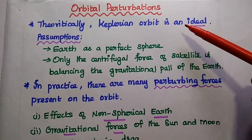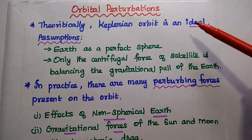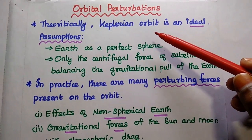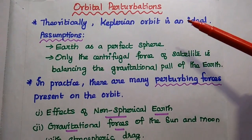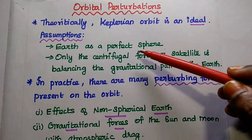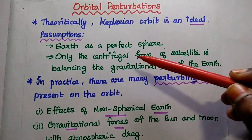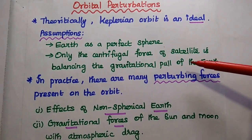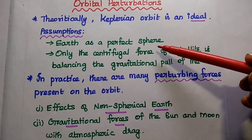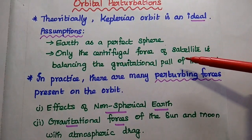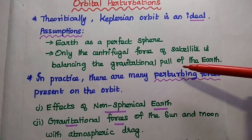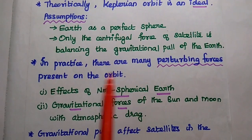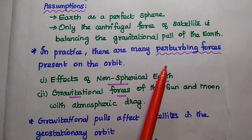Dear students, now we are going to discuss orbital perturbations in detail. In satellite communication, theoretically, the Keplerian orbit is considered as an ideal one due to the following assumptions: Earth as a perfect sphere, and only the centrifugal force of the satellite balancing the gravitational pull of the Earth. But in practice, Earth is not a perfect sphere and there are some gravitational forces from the Moon and Sun. So in practice, there are many perturbing forces present on the orbit. Perturbing forces means obstacles.